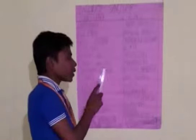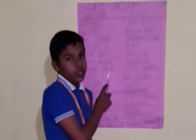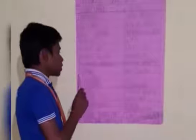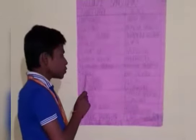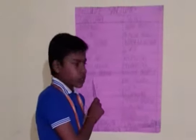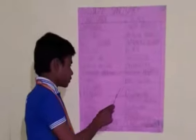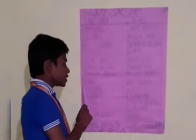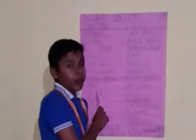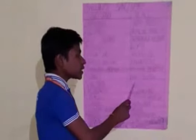Seventh is Chandraprabha Wildlife Sanctuary. It is in Uttar Pradesh. It is Uddhanti Wildlife Sanctuary. It is in Chhattisgarh. Ninth is Malarab Wildlife Sanctuary. It is in Kirga.